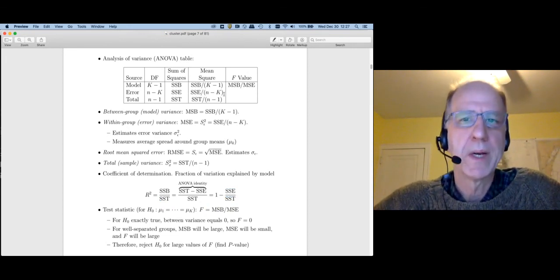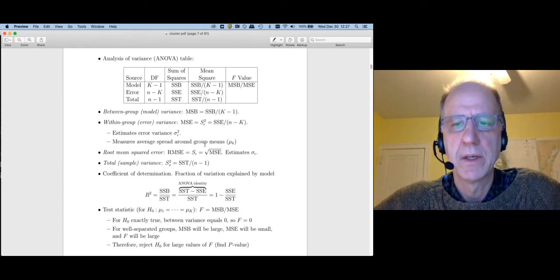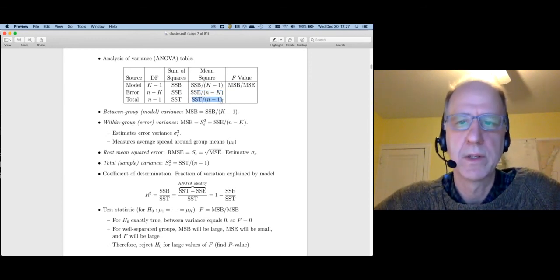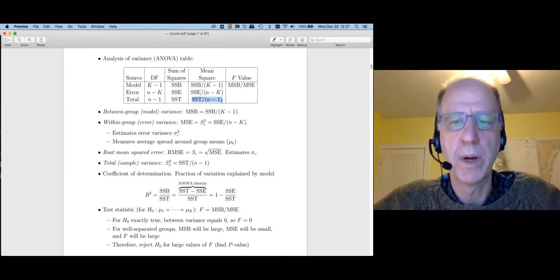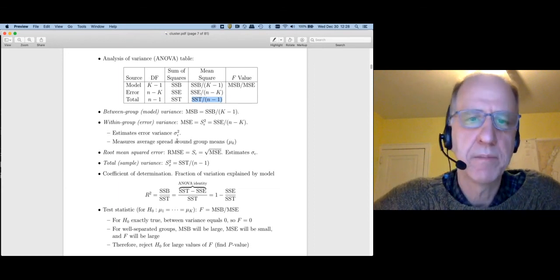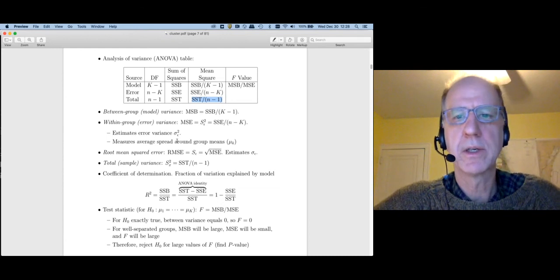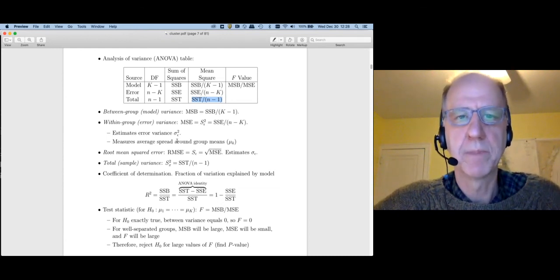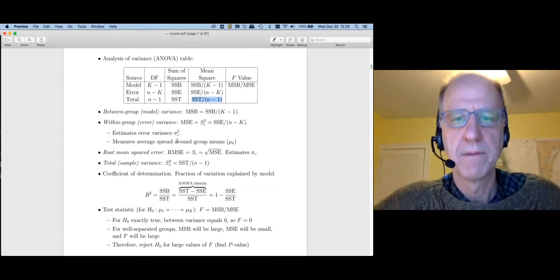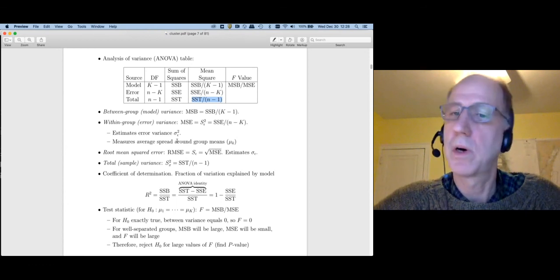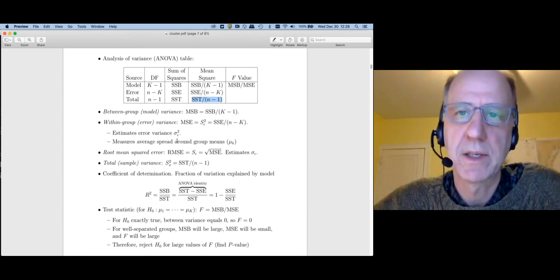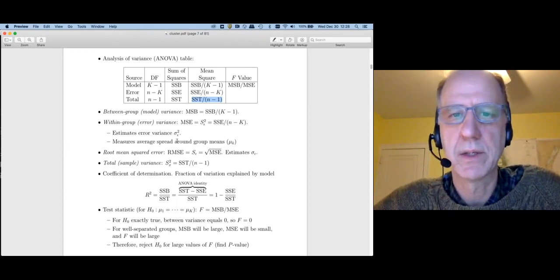I didn't write it here, but adjusted R-squared is simply one minus the mean squared error over the sample variance SST over n minus one. So a lot of these concepts are going to be used in cluster analysis. And so it's important that you understand the notation and these concepts of between and within group variance. And we're also going to come back and use the F-statistic in cluster analysis as well.